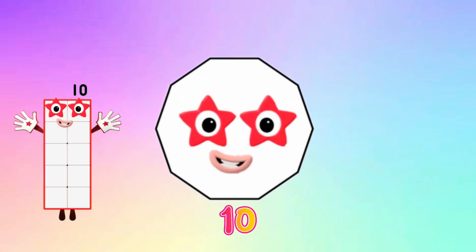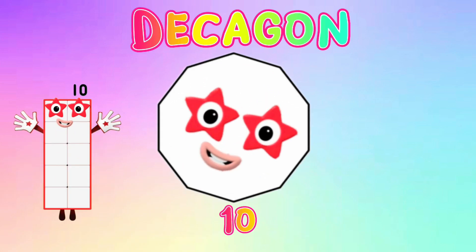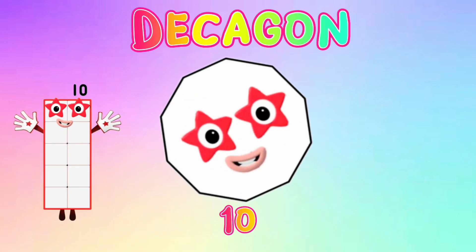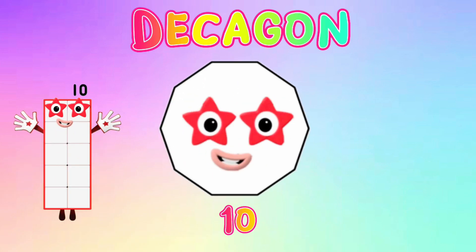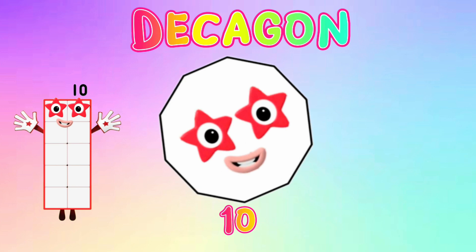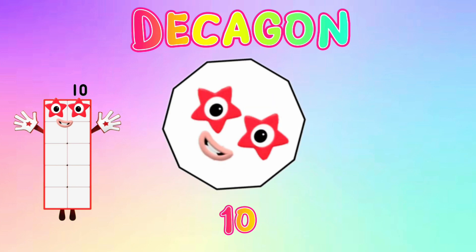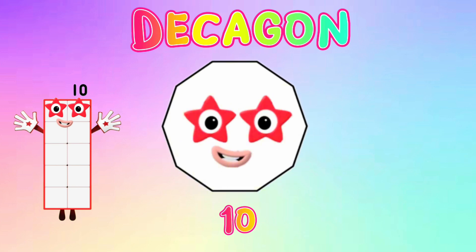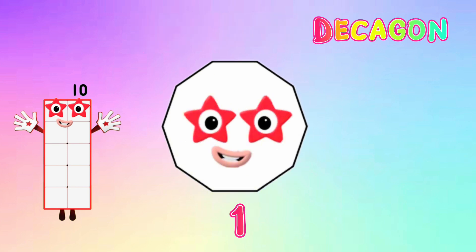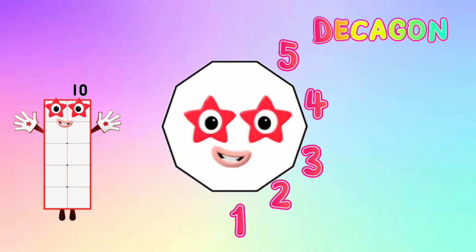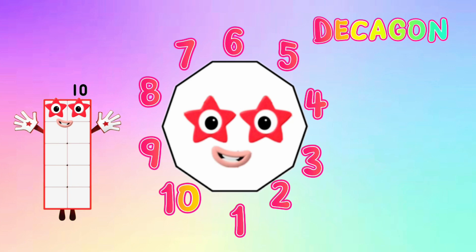And lastly, ten — decagon. It is a closed-shaped polygon with ten sides and ten angles. 1, 2, 3, 4, 5, 6, 7, 8, 9, and 10.